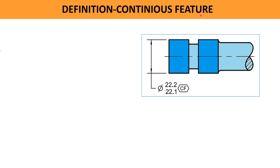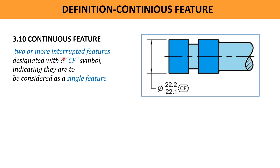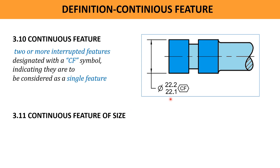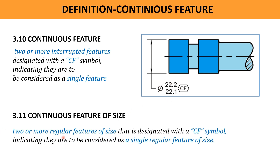Let us define continuous feature: two or more interrupted features designated with a CF symbol, indicating they are to be considered as a single feature. In this drawing, the two features are interpreted as a continuous feature of size. This is defined as two or more regular features of size, designated with the symbol CF, indicating they are to be considered as a single regular feature of size.